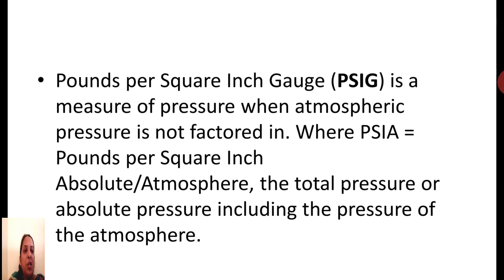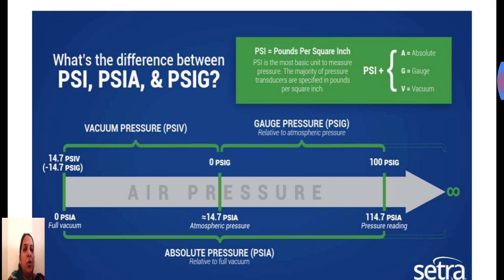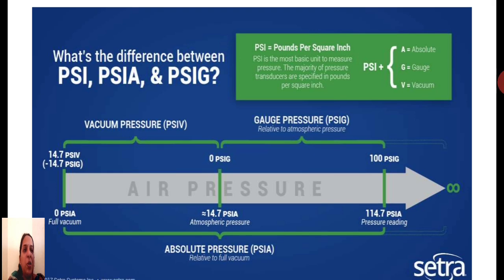Normally the pressure in boilers is maintained and given in terms of the unit pounds per square inch, that is PSI. In certain cases it is given as psiG and in other cases as psiA. psiG is pounds per square inch gauge, whereas psiA is pounds per square inch absolute. This picture clearly depicts the difference between psiG, psiA, and psiB, where psiB is vacuum pressure, and the range of vacuum pressure, gauge pressure, and absolute pressure is clearly shown.